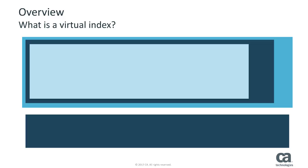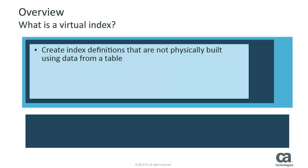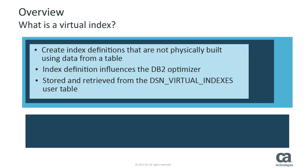What is a Virtual Index? Virtual Indexes are a DB2 feature that let you create index definitions that are not physically built using data from a table. These index definitions contain columns and statistics on those columns, which influence the DB2 Optimizer to consider using the Virtual Index during an EXPLAIN. Virtual Index Definitions are stored in and retrieved from the DSN Virtual Indexes user table.